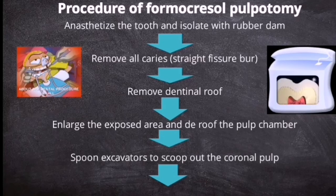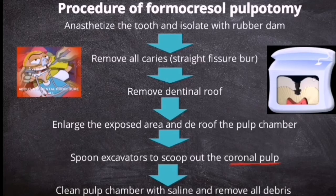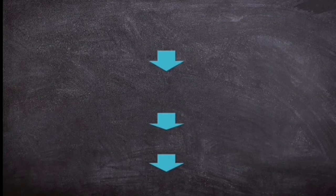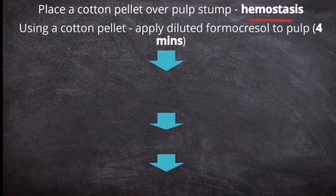Then with a spoon excavator, you scoop out only the coronal pulp. Then you clean the pulp chamber with saline and remove all the debris. The next thing you do is place a cotton pellet over the pulp stump, because you have to achieve hemostasis — you have to control the bleeding. Then using a cotton pellet, you apply diluted formacresol to that pulp portion for approximately 4 minutes.